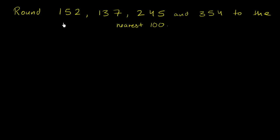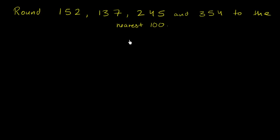We're asked to round 152, 137, 245, and 354 to the nearest 100, which is another way of saying round each of these numbers to the nearest multiple of 100. So let's think about them one by one.